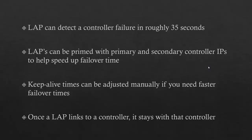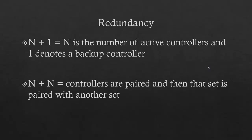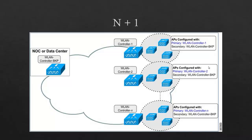Let's talk about redundancy. There are three redundancy types discussed. The first is N plus one — N is the number of active wireless LAN controllers and one denotes a backup controller. So you might have three active wireless LAN controllers and one backup. If one of the active ones fails, the backup takes over. If two fail, you lose one — you're down.